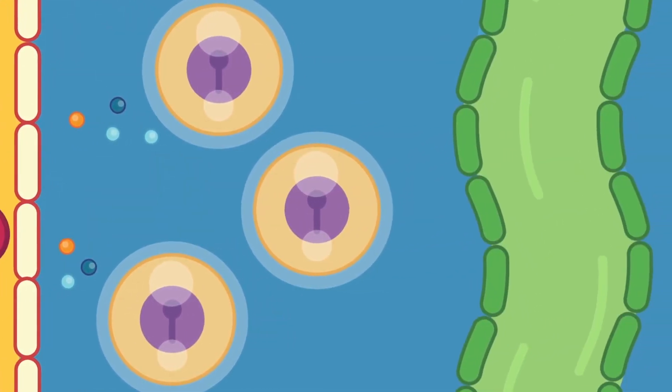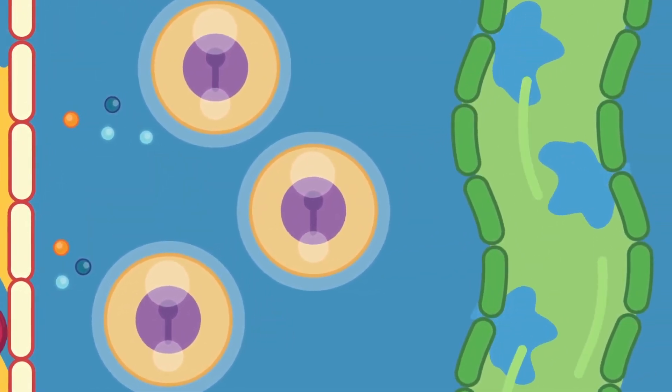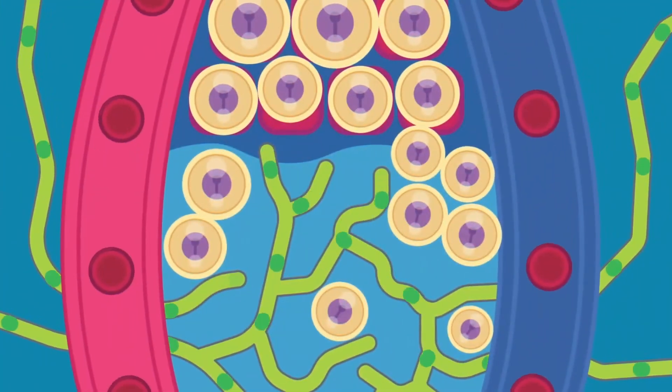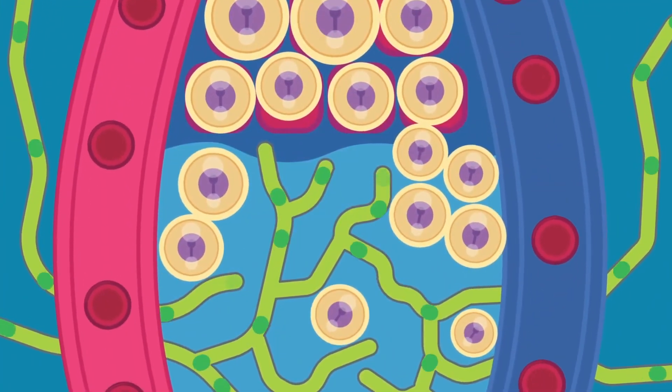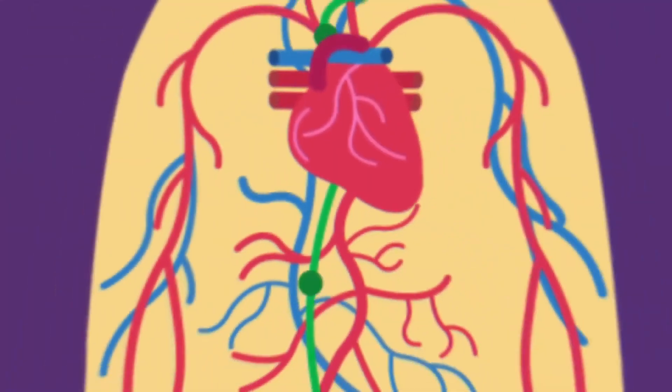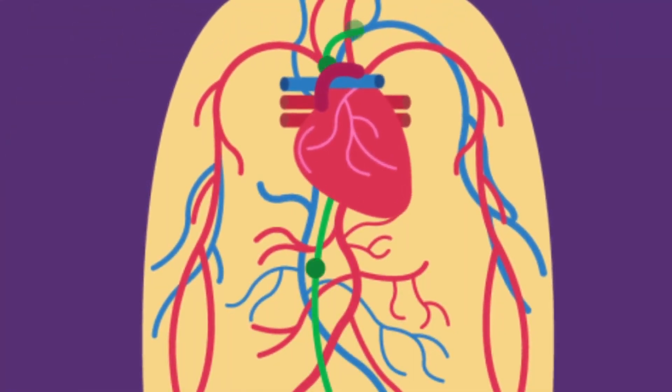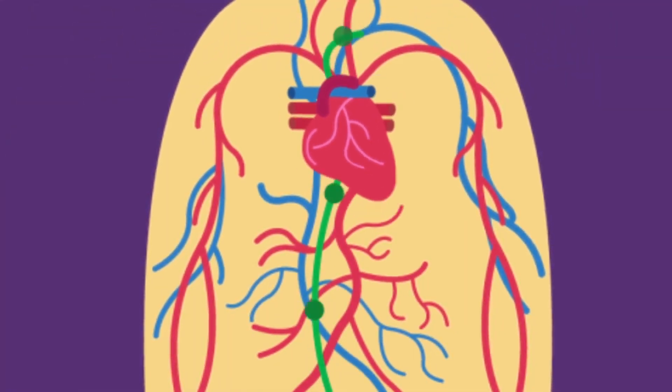Once the extracellular fluid collects into small vessels, it is called lymph. The vessels that carry it back to the blood are called the lymphatic vessels. The lymphatic system returns protein and excess interstitial fluid back to the circulation.